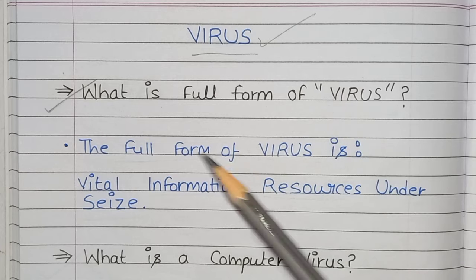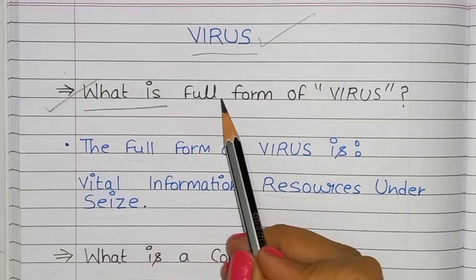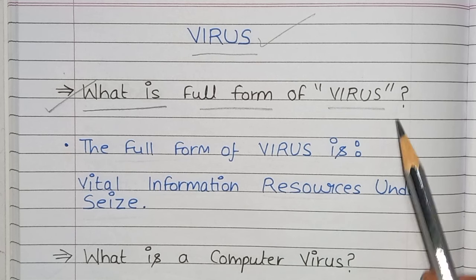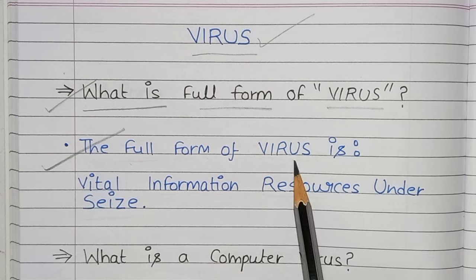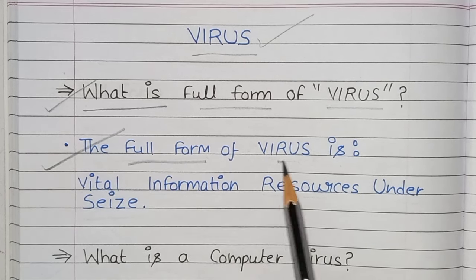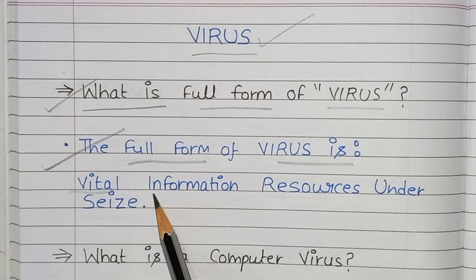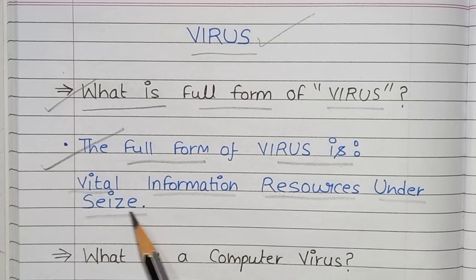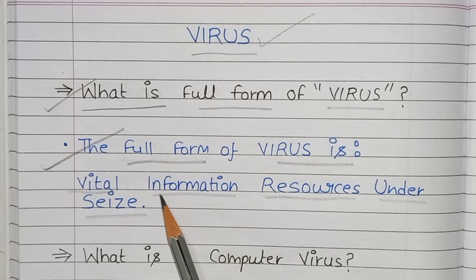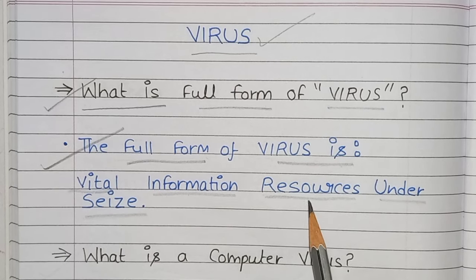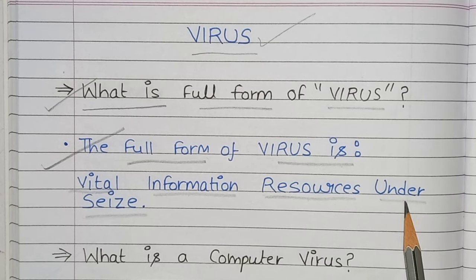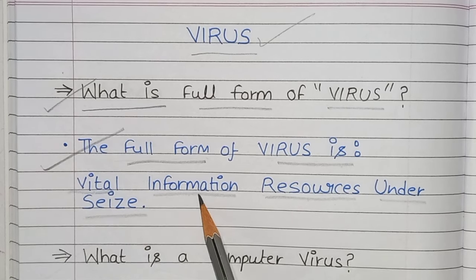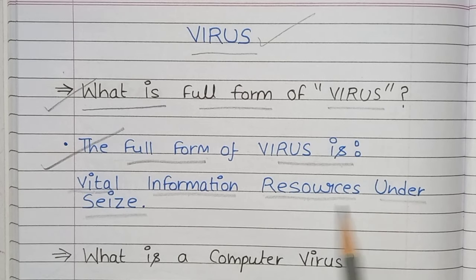First, what is the full form of virus? The full form of virus is Vital Information Resources Under C's. V for Vital, I for Information, R for Resources, U for Under, S for C's — Vital Information Resources Under C's.